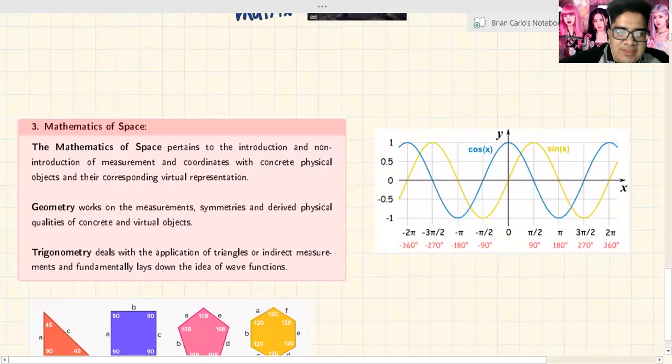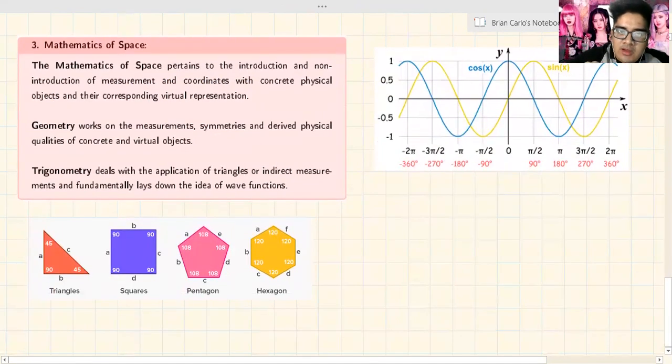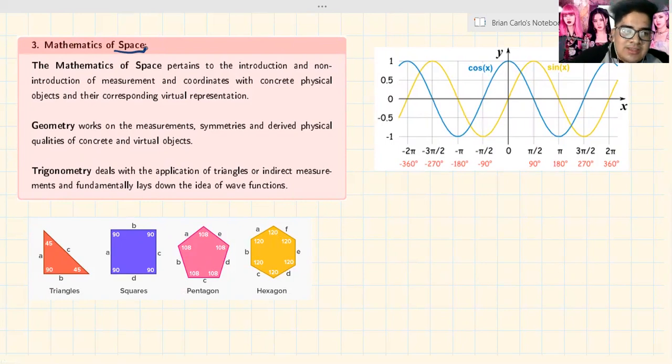This is what we call the mathematics of space. The mathematics of space pertains to the introduction and non-introduction of measurement and coordinates with concrete physical objects and their corresponding virtual representation. We are giving a virtual representation. There are two areas.